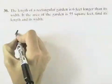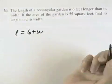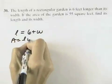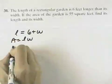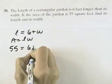Well, the length of the garden is 6 feet longer than the width, so 6 plus the width. And we know that the area is length times width. And since the area is 55 square feet, the length we can express as 6 plus W.